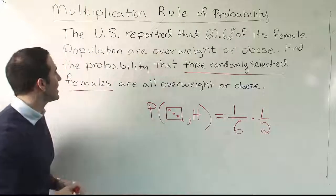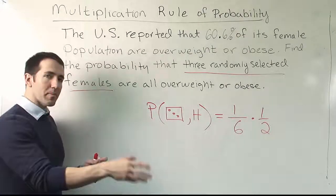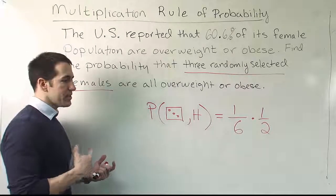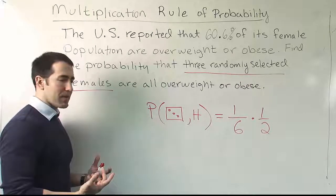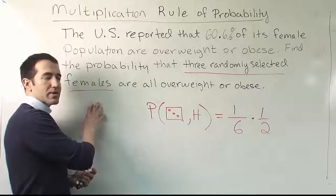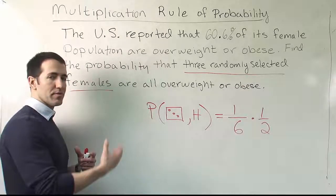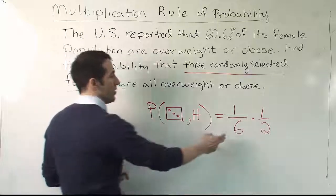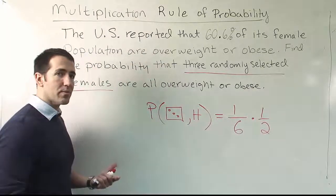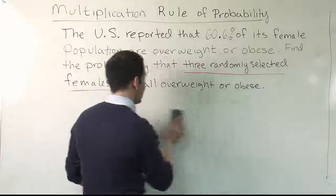We're going to see that this problem works basically the same way. When randomly selecting women from the population, the fact that one woman selected may be obese or overweight — assuming it's a truly random selection and not from the same family — there's no reason why one woman being overweight should affect another randomly selected woman being overweight. So those probabilities remain constant, and I can multiply them straight across: the probability the first woman is obese, times the second, times the third.